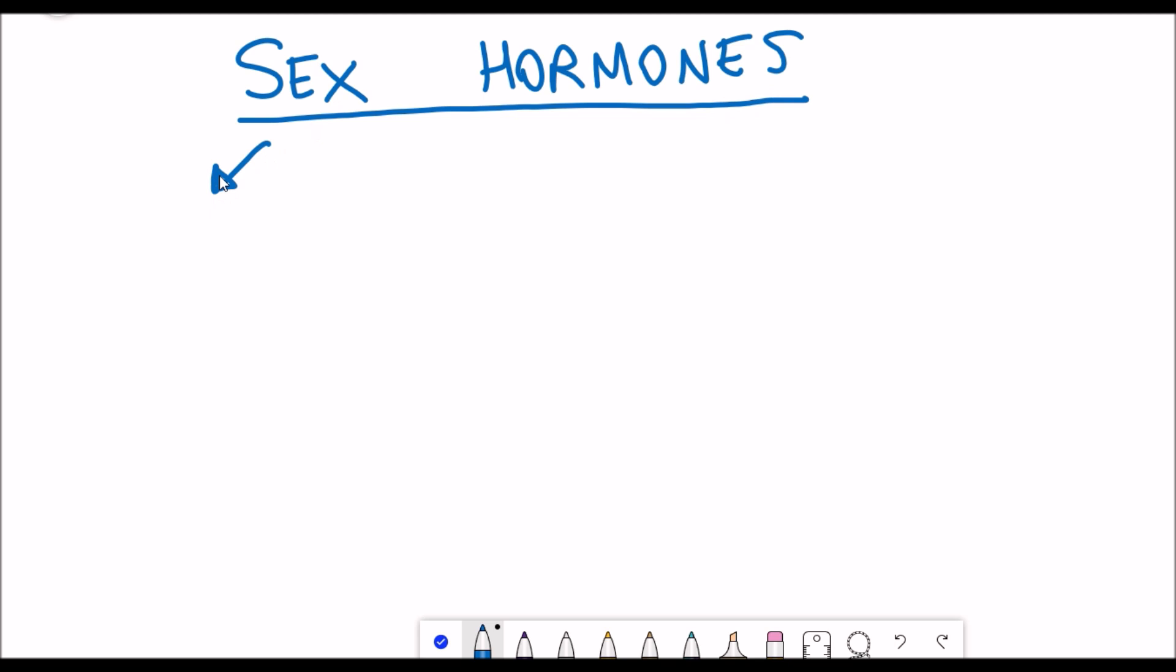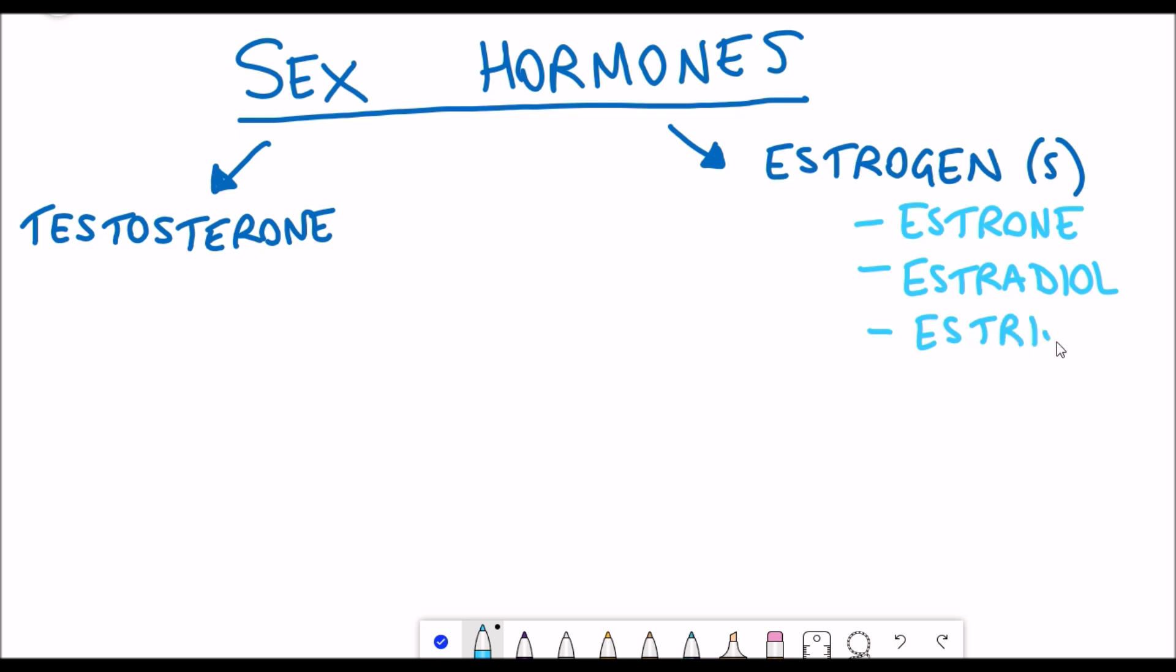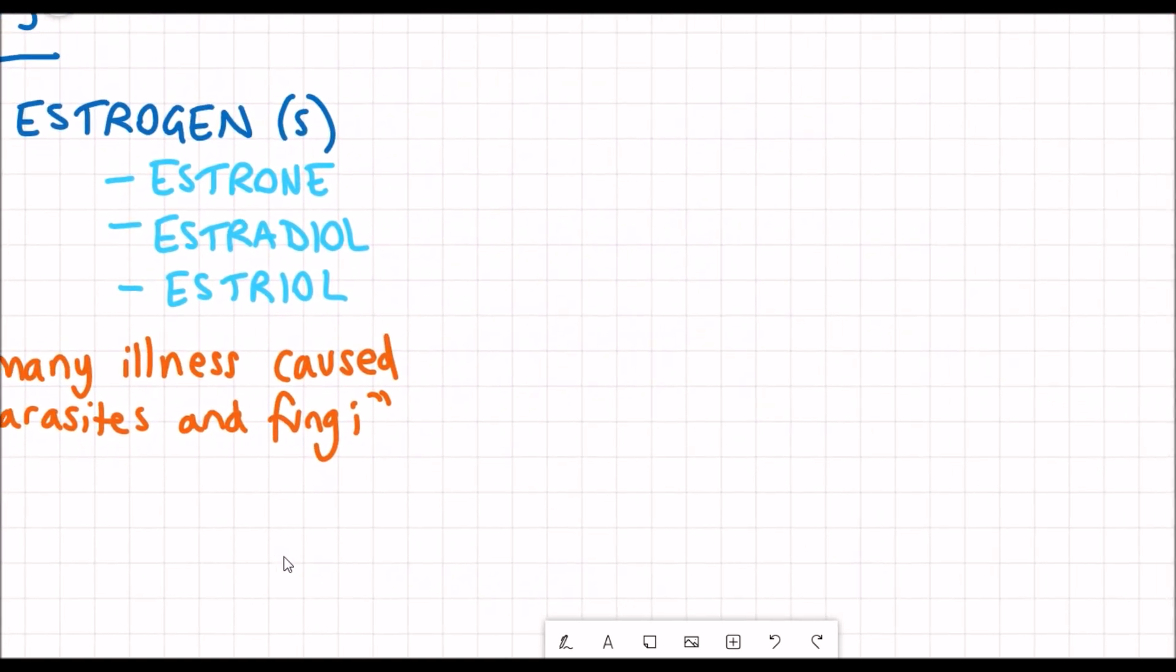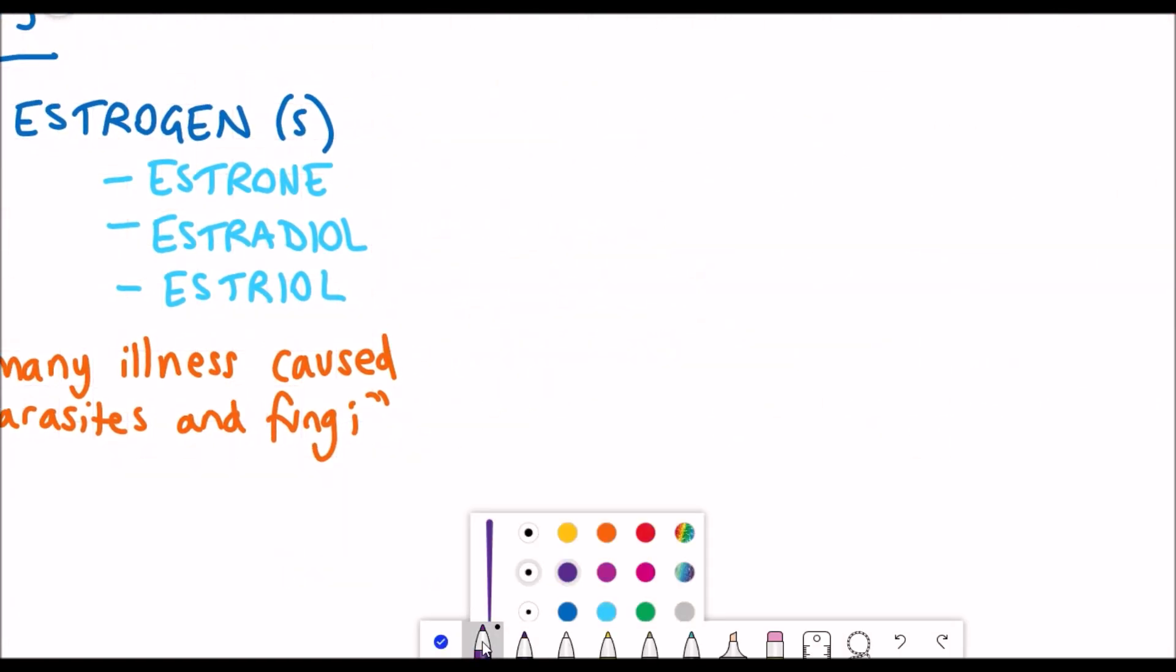So let's start with looking at the sex hormones first. Typically men have higher levels of testosterone and females have higher levels of estrogen. One thing I didn't actually realize was that estrogen, there's different multiple estrogens: there's estrone, estradiol, and estriol. Besides these sex hormones knowing to have an impact on the reproductive system, there's also been studies that have shown the sex hormones have an effect on the immune response. It's well established that men are more susceptible to many illness caused by viruses, bacteria, parasites, and fungi. Unfortunately we even have evidence from this most recent pandemic to support that. So why is that the case and why is it related to hormones?